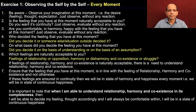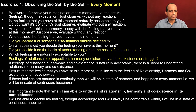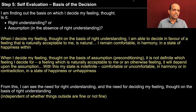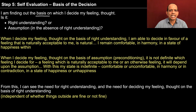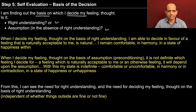Now with this clarity we look into step 5. I will discuss step 5 now. These are the 7 steps that we are discussing. In step 5 we are again doing self-evaluation and trying to find out what is the basis of the decision — the basis on which I decide my feeling, my thought. Is it right understanding or is it some assumption in the absence of right understanding?